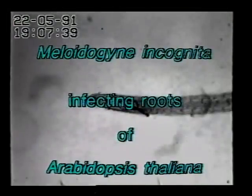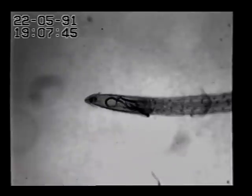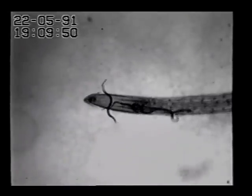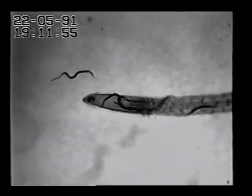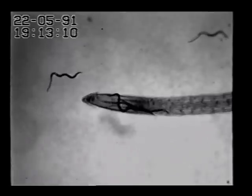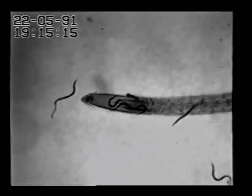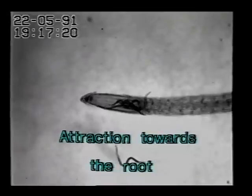The root knot nematode, Meloidogyne incognita, is one of the most important plant parasitic nematodes as it is able to infest almost all kinds of crops. The video demonstrates the infection process in Arabidopsis thaliana. Because of certain unique properties, this plant has become a model for classical and molecular genetics and therefore offers an extraordinary potential to study the interactions between host and parasite. The transparency of its roots allows the observation of infection processes within root tissue under in vivo conditions.